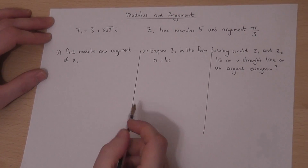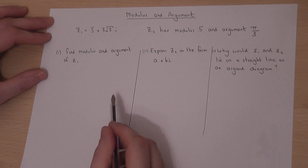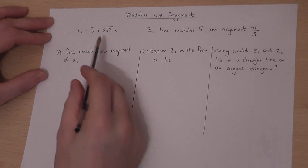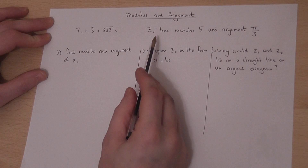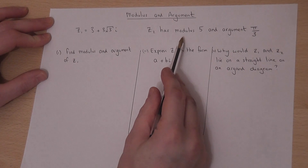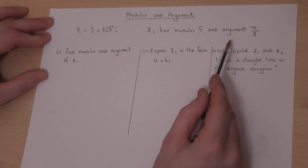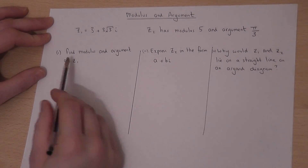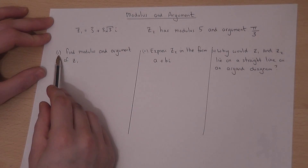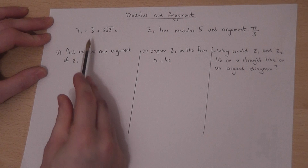This video looks at the modulus and argument of two different complex numbers: one given in the form a plus bi, the other where the modulus — i.e. the length of the complex number — and the argument or the angle has been given. In part one, we're asked to find the modulus and argument of z1.